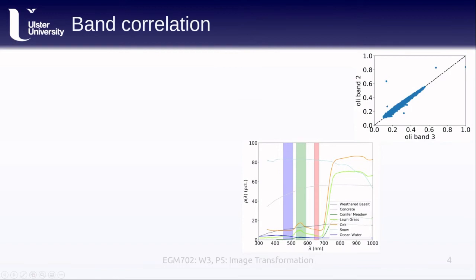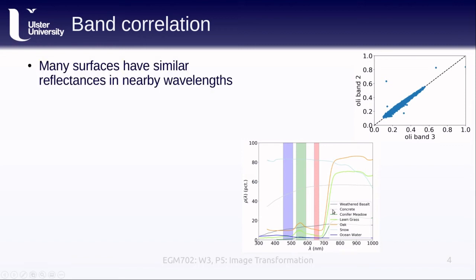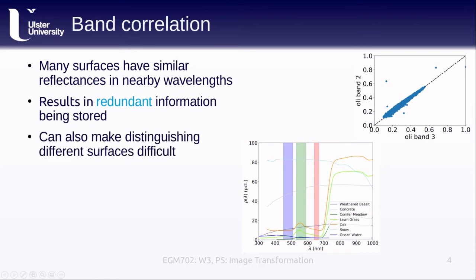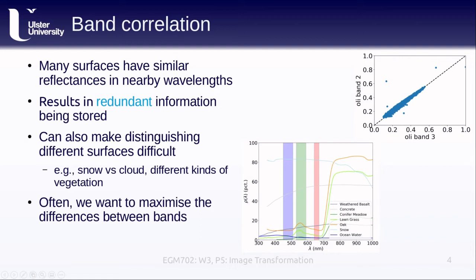One thing that you might notice looking at this graph is that a lot of neighboring bands are correlated. That is, many surfaces or objects have similar reflectances in nearby wavelengths. What this means is that we often have a lot of redundant information in different bands. This can make distinguishing different surfaces more difficult, as they tend to look quite similar. For example, snow and clouds are quite similar in a number of wavelengths. Distinguishing between different kinds of vegetation can be quite hard, as color differences can be very subtle. To try and get around this, we have some techniques that we can use to help maximize the differences between bands, which makes it easier to extract information from the image.